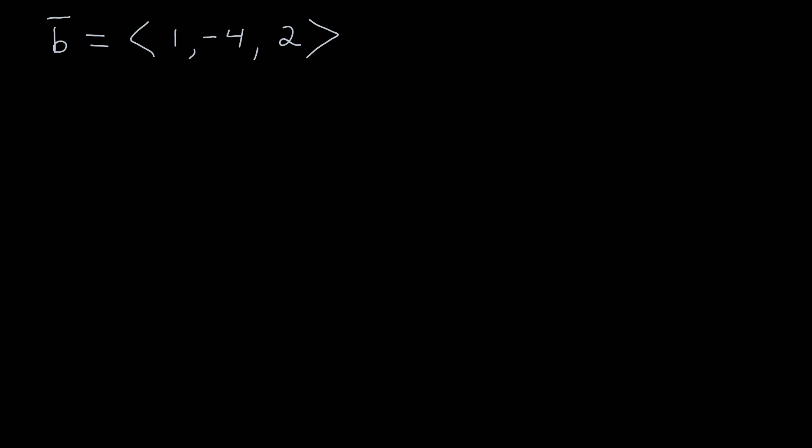Just briefly another example. Here I have a vector defined by 1, negative 4, and 2. It's in three dimensions. I can calculate the magnitude of that, which is the square root of 1 squared, plus 4 squared, plus 2 squared, which is equal to the square root of 21, which is about 4.58.